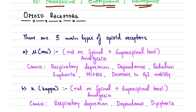Moving on to opioid receptors — there are mainly three types. Number one is the mu receptor. Mu receptors are present at the spinal and supraspinal level, and they provide spinal as well as supraspinal analgesia.